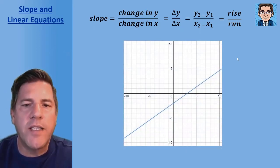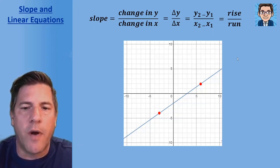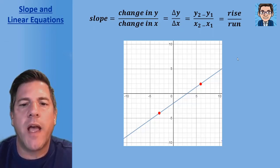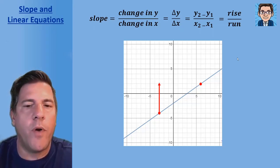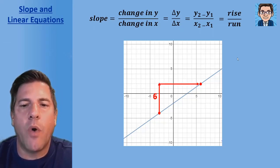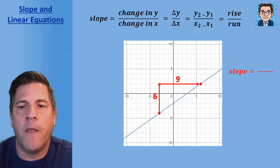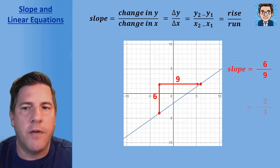On a graph, we take two points that cross at whole numbers. We see how much y changes — the rise. To go from one point to the other we go up by six, and then over by nine. So the difference in y over the difference in x, or rise over run, is six over nine.